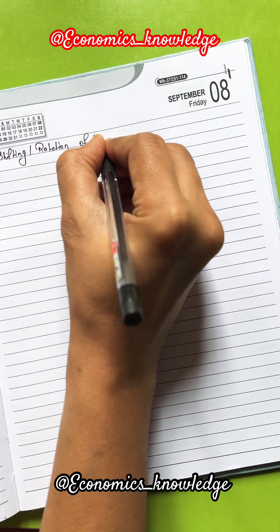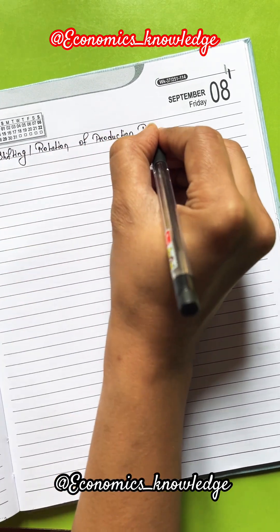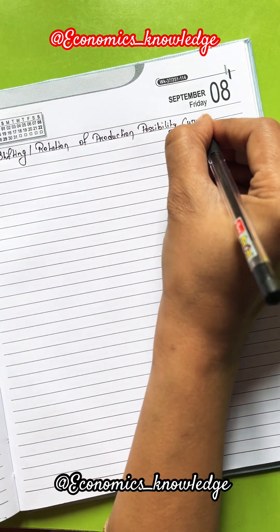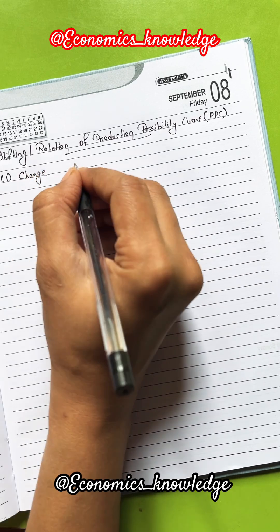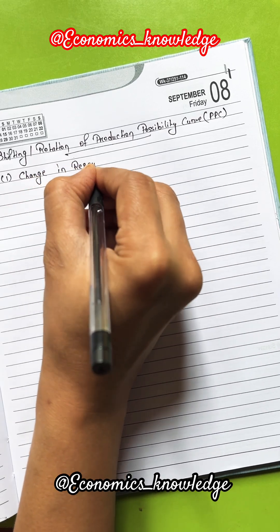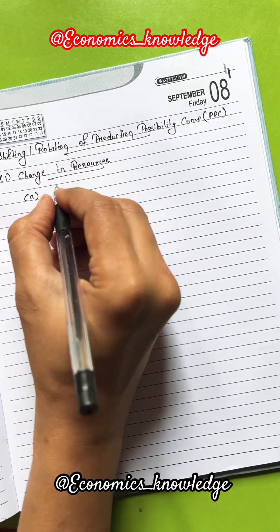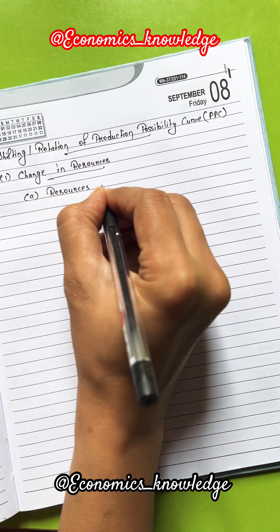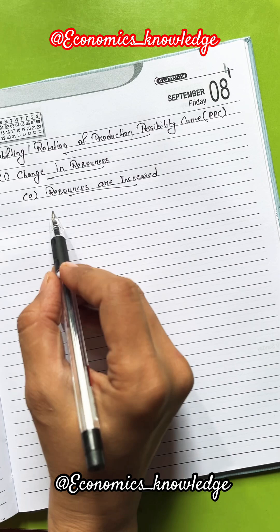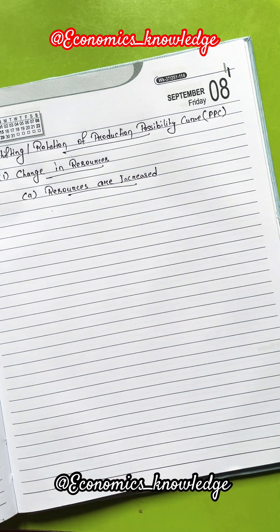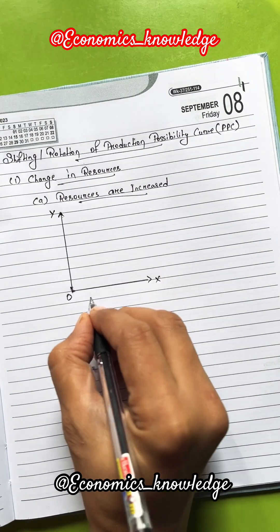Shifting and rotation of the production possibility curve happens under two conditions. Number one is change in resources — resources can be increased or decreased. Let's see first what happens to the PPC curve when resources are increased.